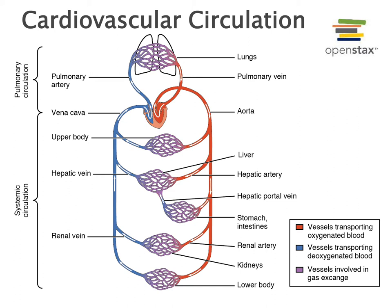Arteries branch into smaller and smaller arterioles, and the arterioles then deliver blood into capillaries. Arterioles are the smallest arteries, and because they have a relatively small diameter but receive blood at relatively high pressure, arterioles play a major function in regulating blood pressure and the distribution of blood to different capillary beds. They are the primary resistance vessels critical for slowing down blood flow, and as blood flows through the arterioles into the capillaries, blood pressure drops.